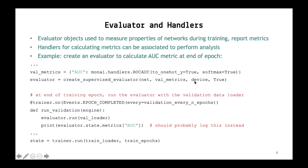Leading on from that, you have evaluators and handlers. Evaluator objects are used to measure properties of the network during training, and handlers for calculating metrics can be associated to perform analysis. Here you can see an example of an evaluator used to calculate the area under the curve metric, and it does so at the end of each epoch. We create the evaluator much in the same way as we created the supervised trainer beforehand. Then it gets run at the end of every epoch — it evaluates the AUC and prints it. It'd probably be more useful to put this into a log, but this is just a simple example.